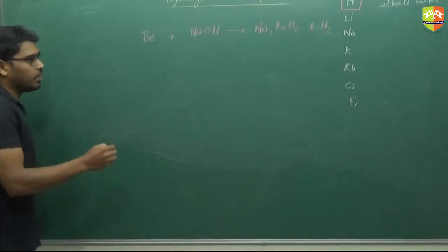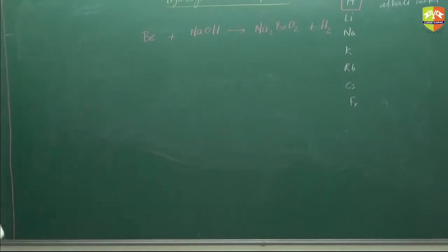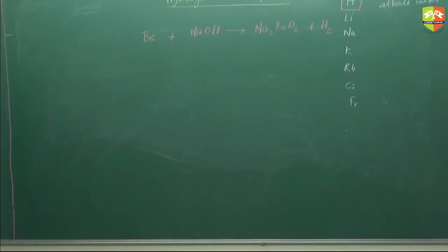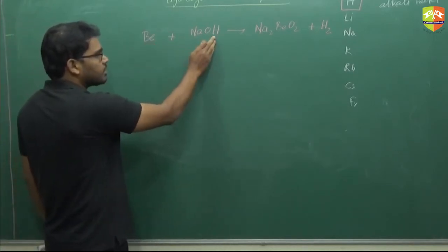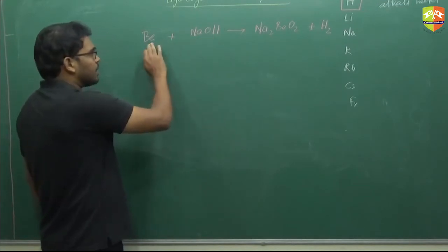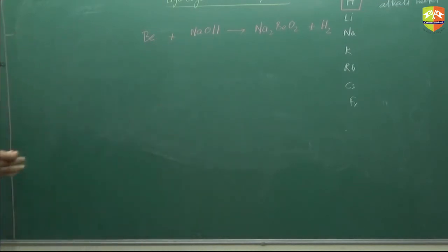If you take aluminium, it forms sodium aluminate. This is because beryllium can displace hydrogen — it depends upon the electrode potential, which we will discuss in electrochemistry. It can displace hydrogen gas from alkali solution.